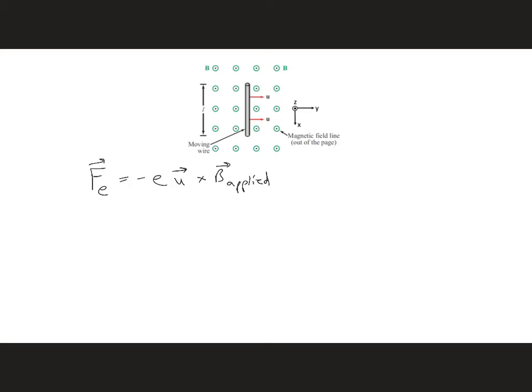And this force is going to cause the electrons to migrate, in this case, to the top of the wire, since U crossed B will point downward, but then we multiply that times this minus 1. So the electrons here are going to be concentrated here in the top of the wire, which means the bottom of the wire will have a net positive charge.